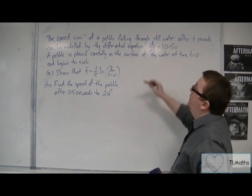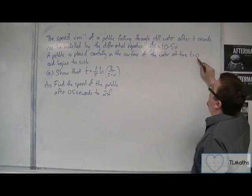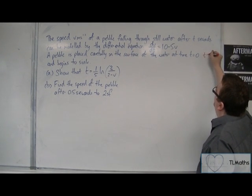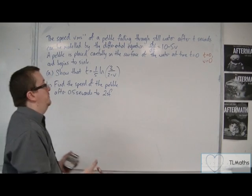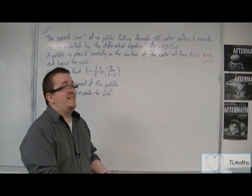So we've been given an initial condition that when t is 0, the velocity is 0. So the speed is 0 of the pebble. So we know that when t is 0, v is 0.